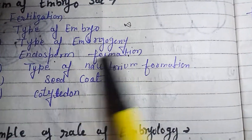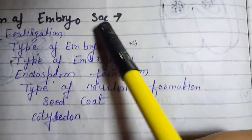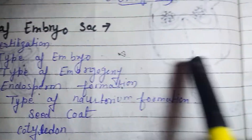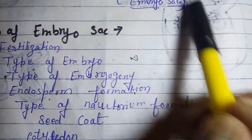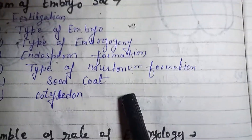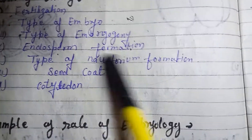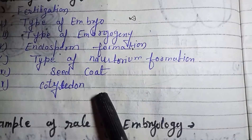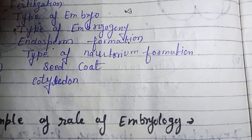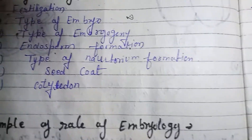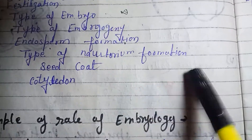We will study types of embryos, endosperm formation, and which nutritional medium will support good development. The seed coat is the protective covering, and we will identify cotyledons — monocotyledons and dicotyledons — to determine which group they belong to. This was our brief topic overview.